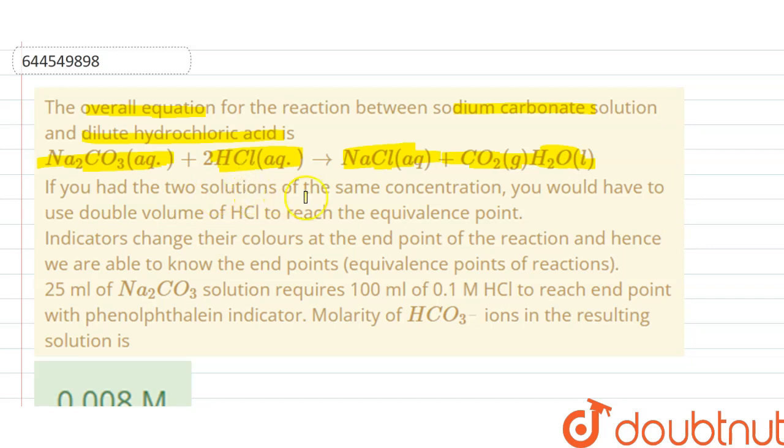If you had the two solutions of the same concentration, you would have to use double volume of HCl to reach equivalence point. Indicators change their colors at the end point of the reaction and hence we are able to know the end points, equivalence points of the reaction. 25 ml of Na2CO3 solution requires 100 ml of 0.1 molar HCl to reach end point with phenolphthalein indicator.